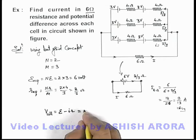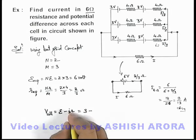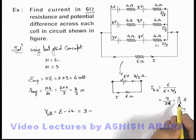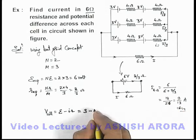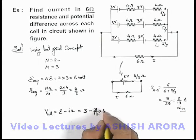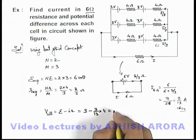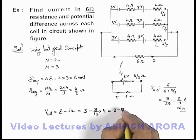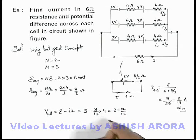So the potential difference across each cell we can write as E minus IR. Then E will be 3 minus this current will be I by 3, that'll be 3 by 13, so this'll be 3 by 13 multiplied by 4. So on simplifying we are getting 3 minus 12 by 13, so this'll be 27 by 13 volt.